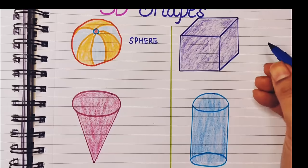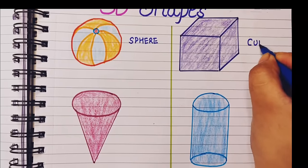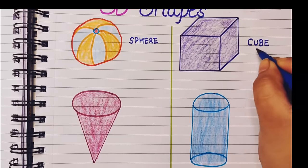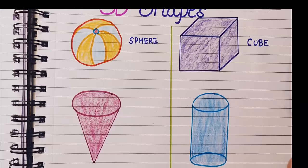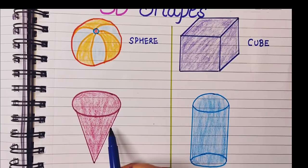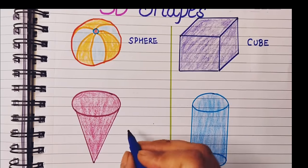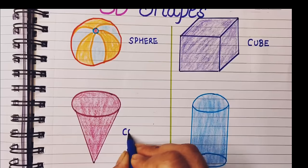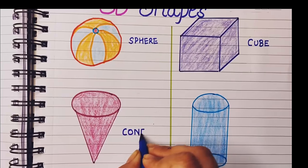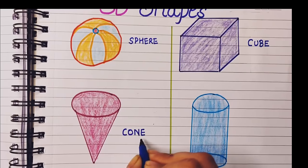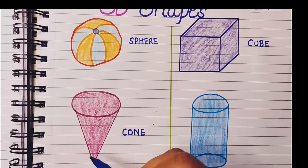The next shape is cone shape: C-O-N-E, cone shape. This looks like an ice cream cone, hence it is known as cone shape.